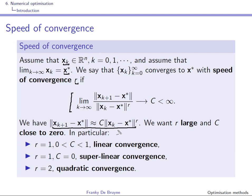The error at iteration k+1 relates to the error at iteration k raised to the power r, multiplied by constant c: ‖x_{k+1} − x*‖ ≈ c · ‖x_k − x*‖^r. We want r to be as large as possible and c as small as possible. If the error is 0.1 and r = 2, squaring gives 0.001, then multiplied by c < 1 gives an even smaller error at the next iteration.